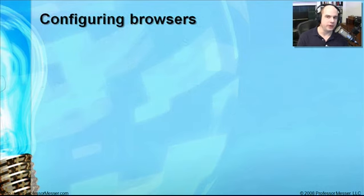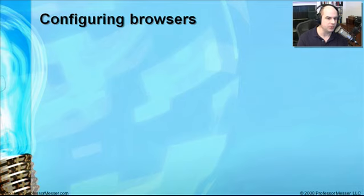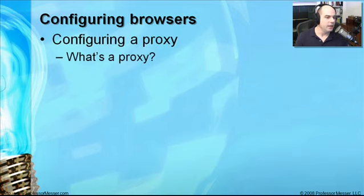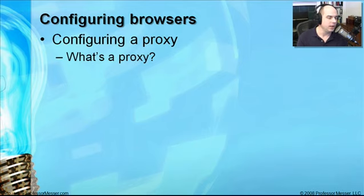Let's start with configuring browsers. That's not something we often think about — configuring network settings inside of a browser. We start our browser up, we connect to Google, and we're on the internet. But if you're in a large organization, there may be a number of configuration settings you need to put in your browser for it to operate properly. One of the more important ones, especially in large environments, is configuring a proxy.